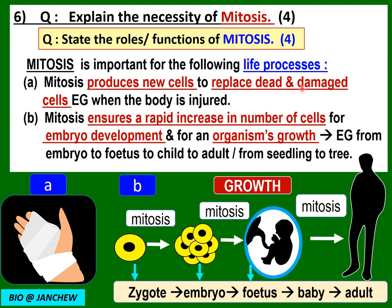To replace damaged cells — for example, if a person has a cut on the hand, the cells must carry out mitosis to produce new cells to replace the damaged cells so that the wound can heal.